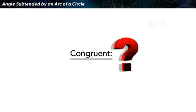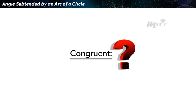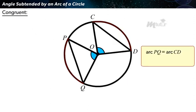When can we say two arcs are congruent? Congruent arcs, or equal arcs of a circle, subtend equal angles at the center.